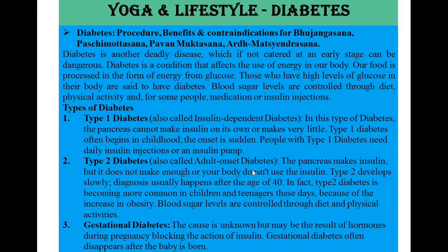Types of Diabetes. Type 1 Diabetes, also called insulin-dependent diabetes. In this type of diabetes, the pancreas cannot make insulin on its own or makes very little. Type 1 diabetes often begins in childhood and the onset is sudden. People with Type 1 diabetes need daily insulin injections or an insulin pump.